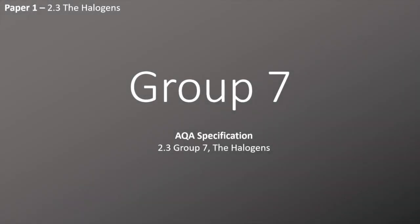Hello and today we're going to talk about the group 7 elements, the halogens. It's AQA specification 2.3 and it appears on paper 1.